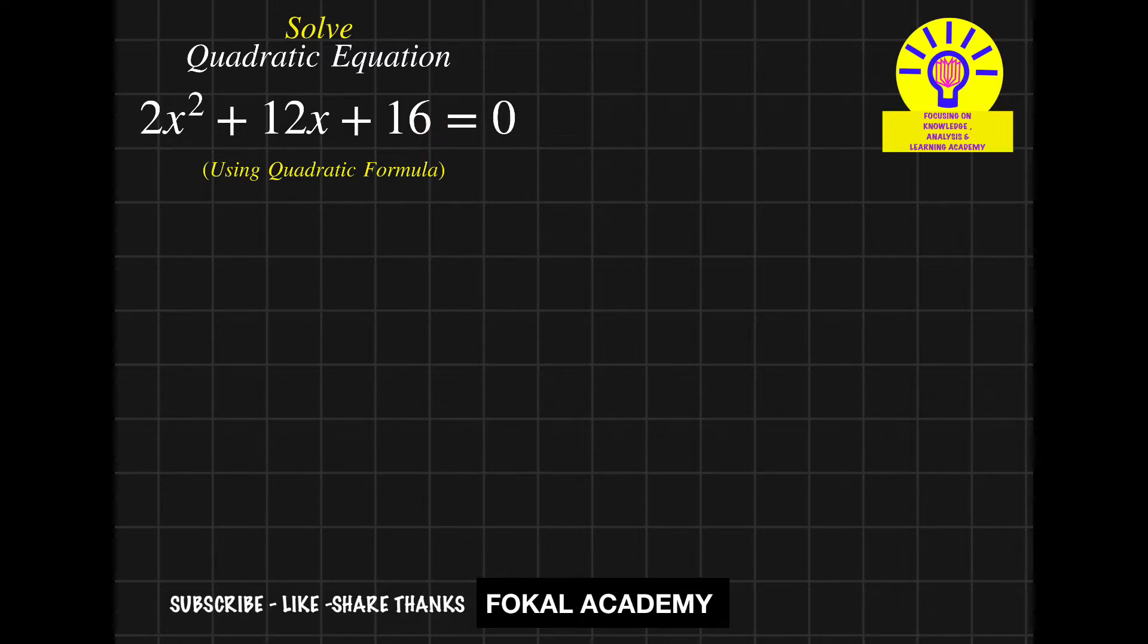The standard format for the quadratic equation is ax² + bx + c = 0. By comparing with this equation, we'll get a = 2, b = 12, and c = 16.